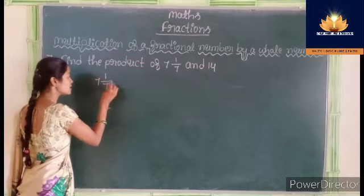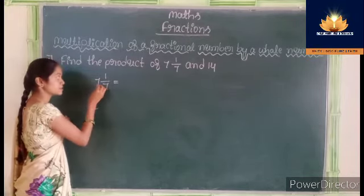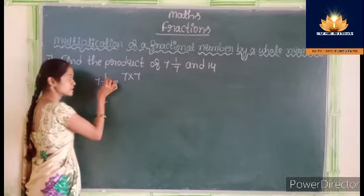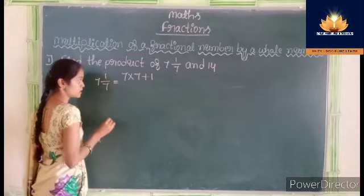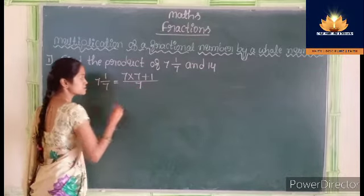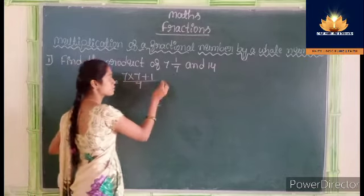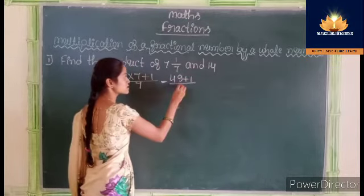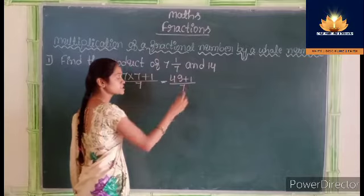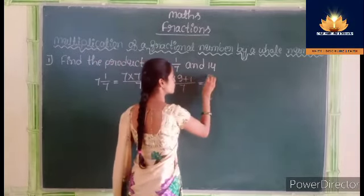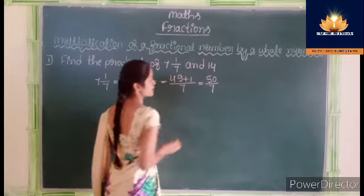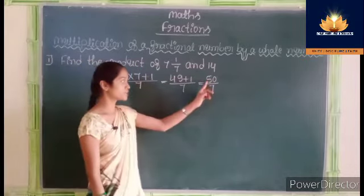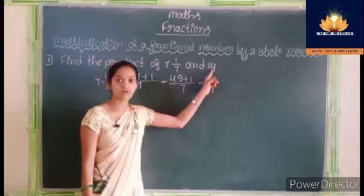7 and 1 by 7: multiply 7 and 7, that is 7 into 7 plus numerator 1, then denominator 7. So 7 sevens are 49 plus 1, divided by 7 equals 50 by 7. We get 50 upon 7. Now we have to multiply 50 upon 7 by 14.